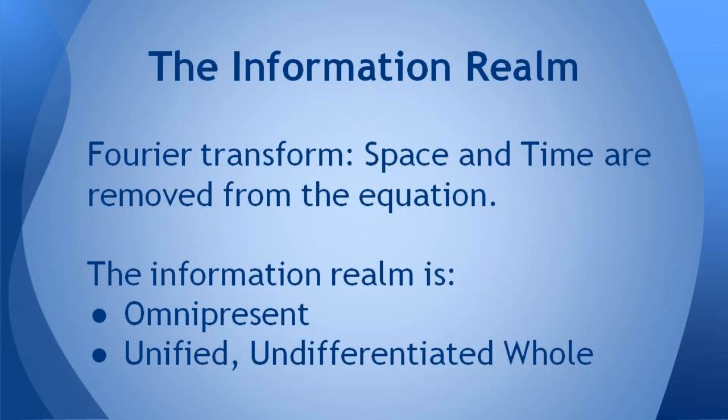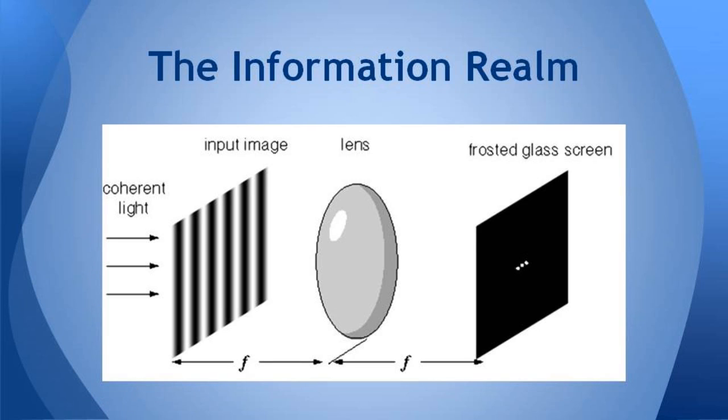It's a unified, undifferentiated whole. So if there's no physical extent or time, no space or time in this representation, anything in the information realm is unified, undifferentiated whole. And it turns out that light is the perfect example of an entity that lives in the information realm.